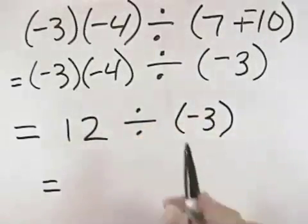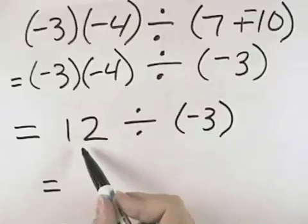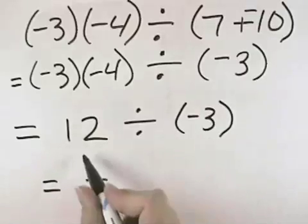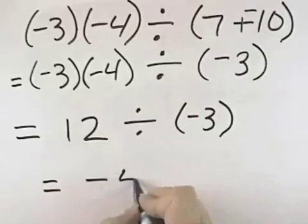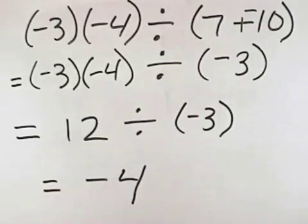Now our last operation is division. A positive divided by a negative is negative, and 12 divided by 3 is 4. So our answer is negative 4.